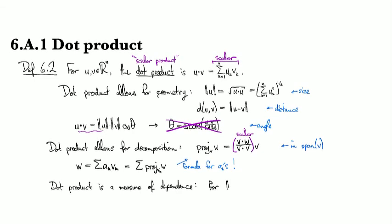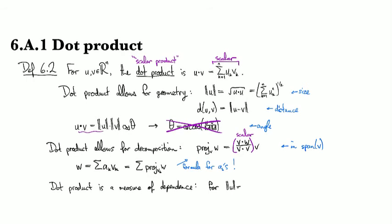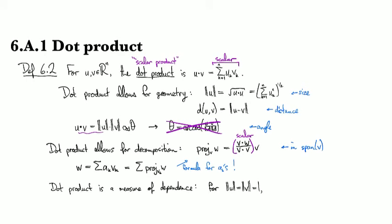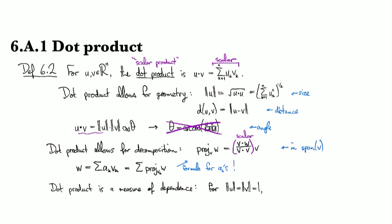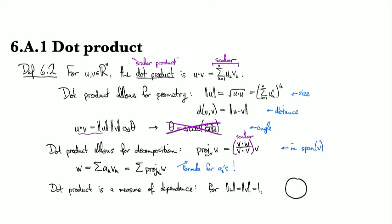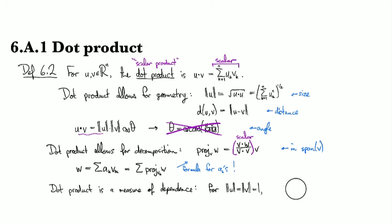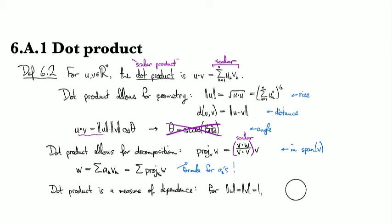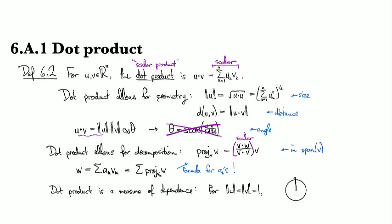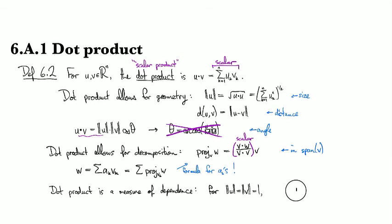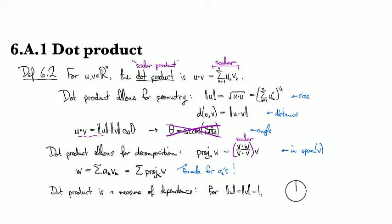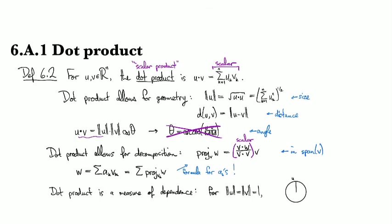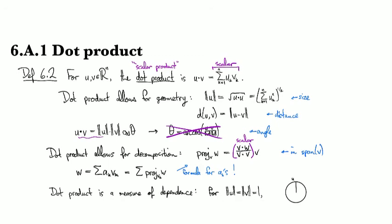So if we have, say, two unit vectors, so these are both vectors of length one. Let's fix one of them. I'll take u to be going this way. That was a pretty crappy u. So here's u. And then we will look at what happens with different values of v. So suppose we have v over here.